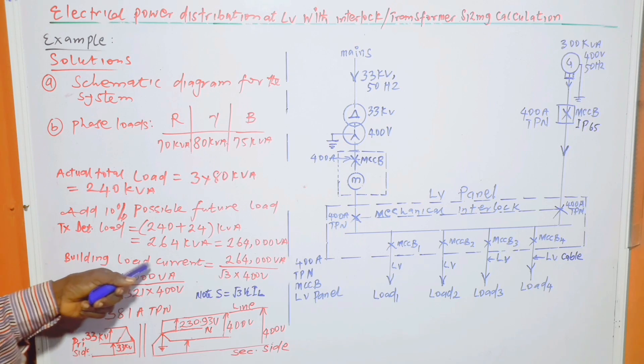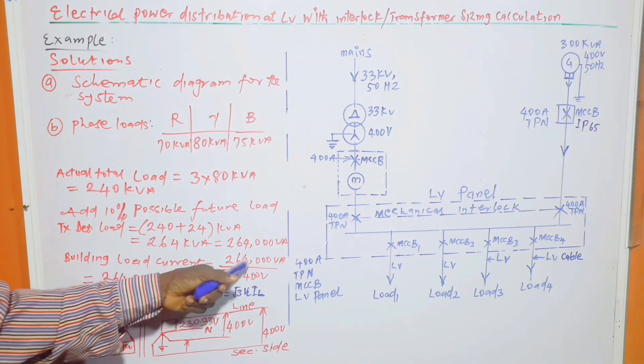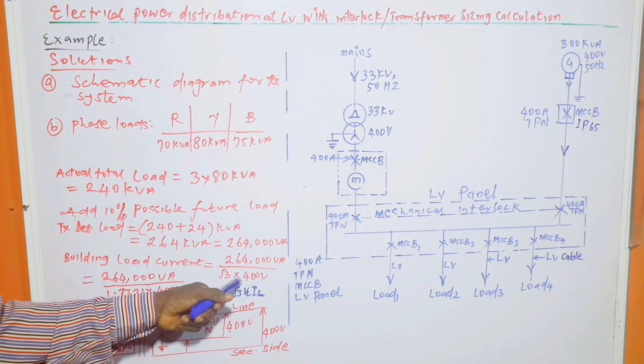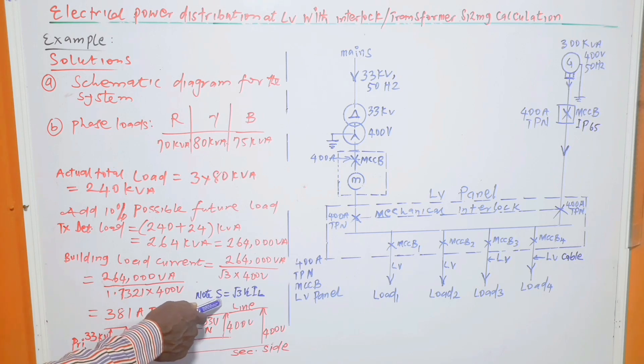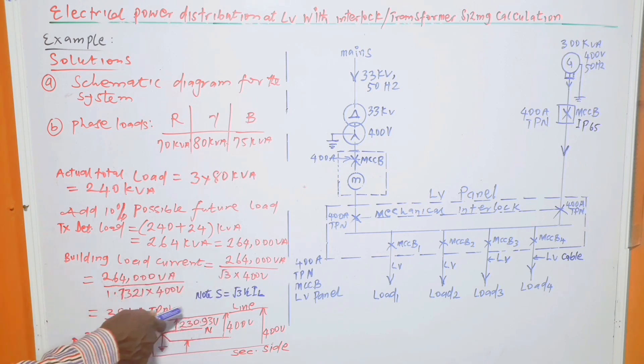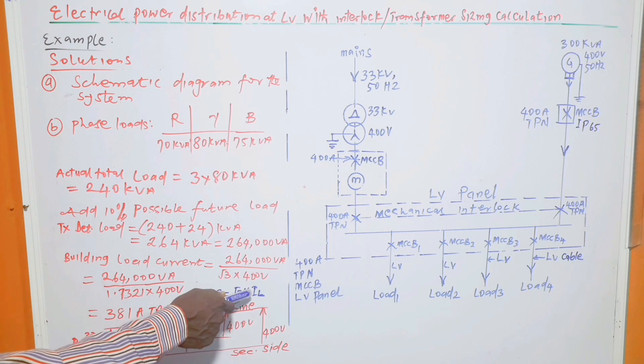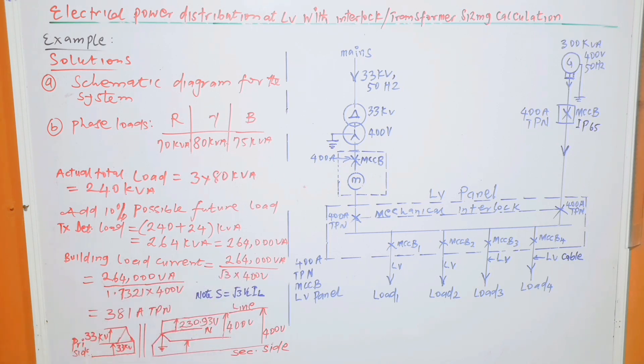Then we can move further to calculate the building load current, which is equal to 264,000 VA divided by root 3 times 400 volts. So from this formula S equals root 3 times V line times I line, from which we can calculate I line to be equal to 381 ampere triple phase with neutral. In this case, it doesn't mean that the neutral current is 381. We are just saying that we have three phases plus neutral. It is the line current, which is equal to the phase current in this situation, that is 381 ampere.